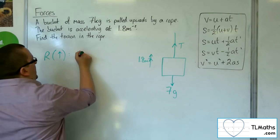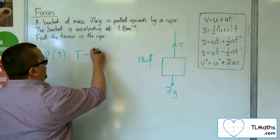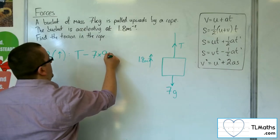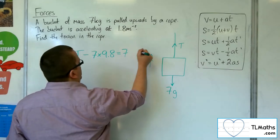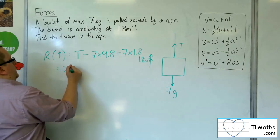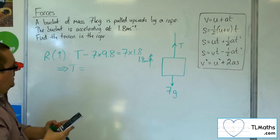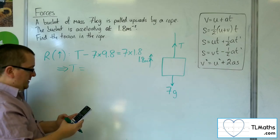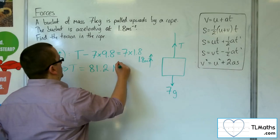I've got T working upwards, I've got 7g working downwards, so I'm going to use 9.8 for the g, equals the mass, 7, times by the acceleration, 1.8. So the tension is 7 lots of 1.8 plus 7 lots of 9.8, and that gets us 81.2 newtons.